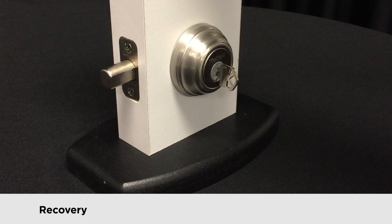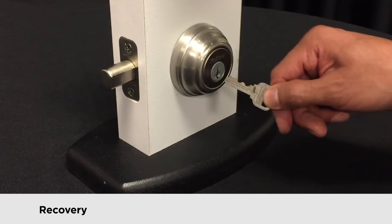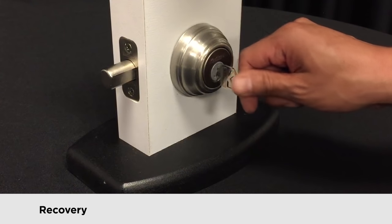Now we're going to show you the recovery method. Continue working with the last key that was used during the rekeying process. Insert the key and try to find the spot where the cylinder learned the key.